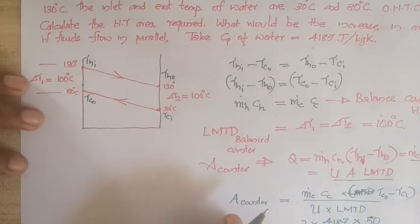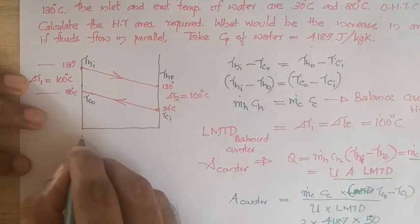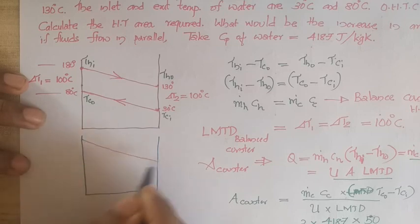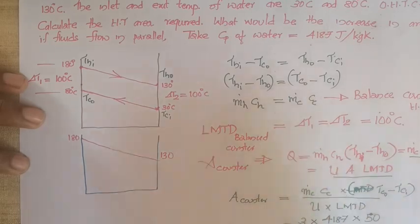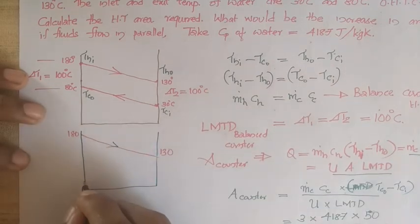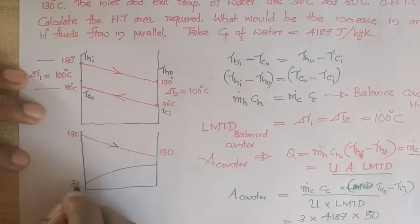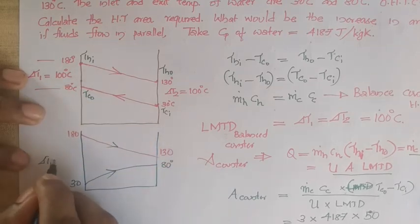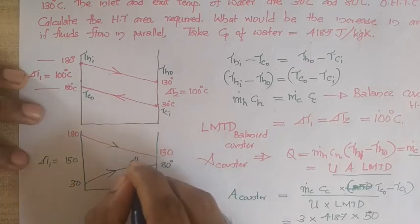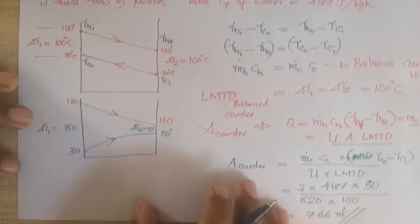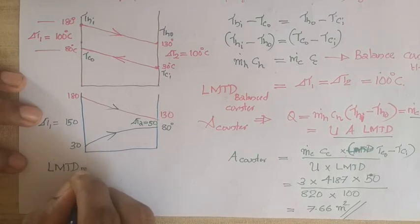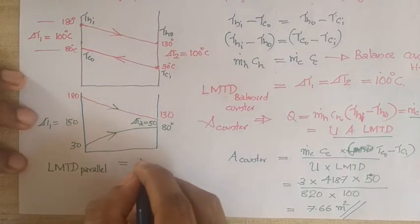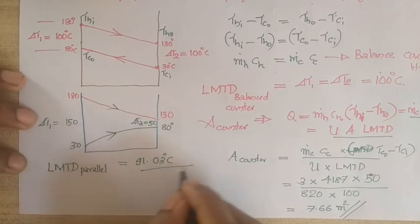The last part asks for the increase in area if the fluids flow in parallel. For parallel flow, both fluids move in the same direction: hot fluid from 180°C to 130°C and cold water from 30°C to 80°C. Here ΔT1 = 180 − 30 = 150°C and ΔT2 = 130 − 80 = 50°C. The LMTD for parallel flow is (150 − 50) / ln(150/50) = 91.03°C.